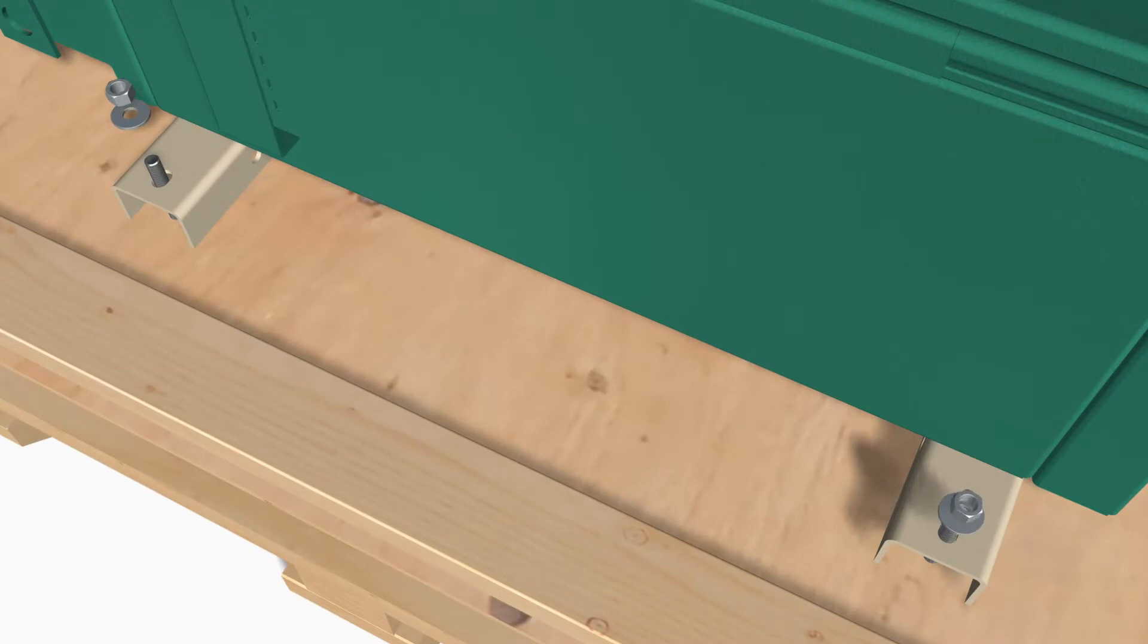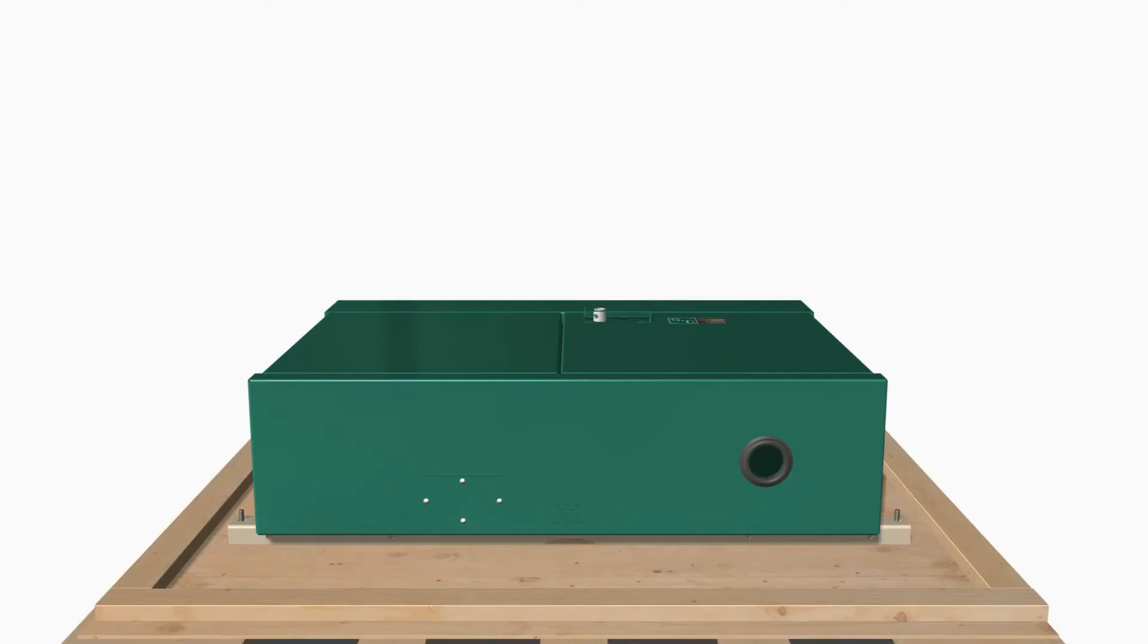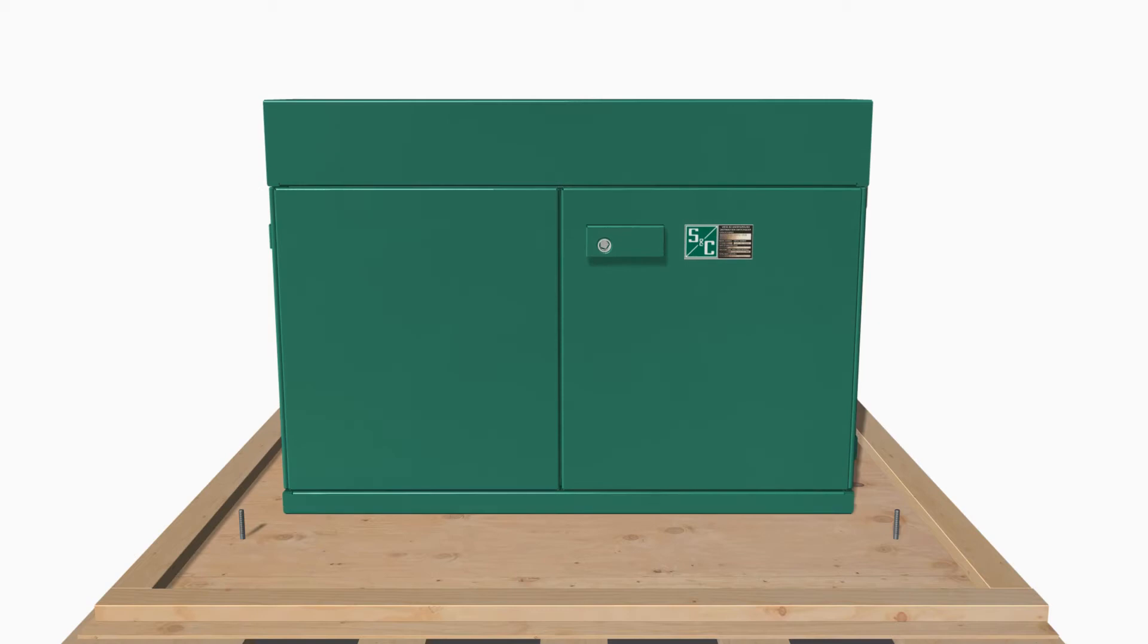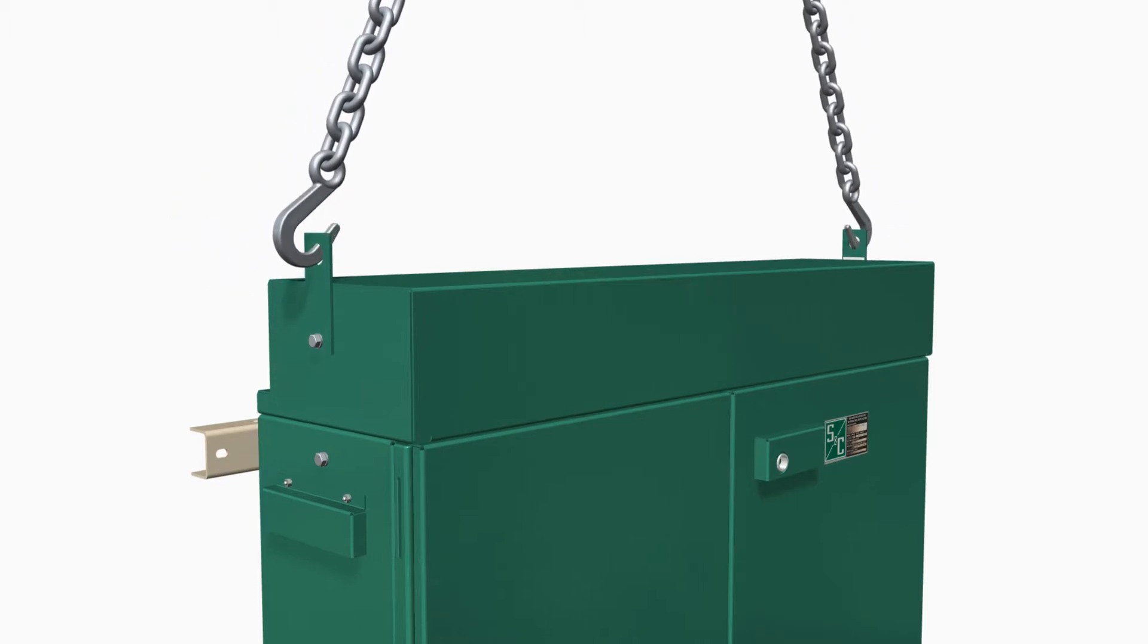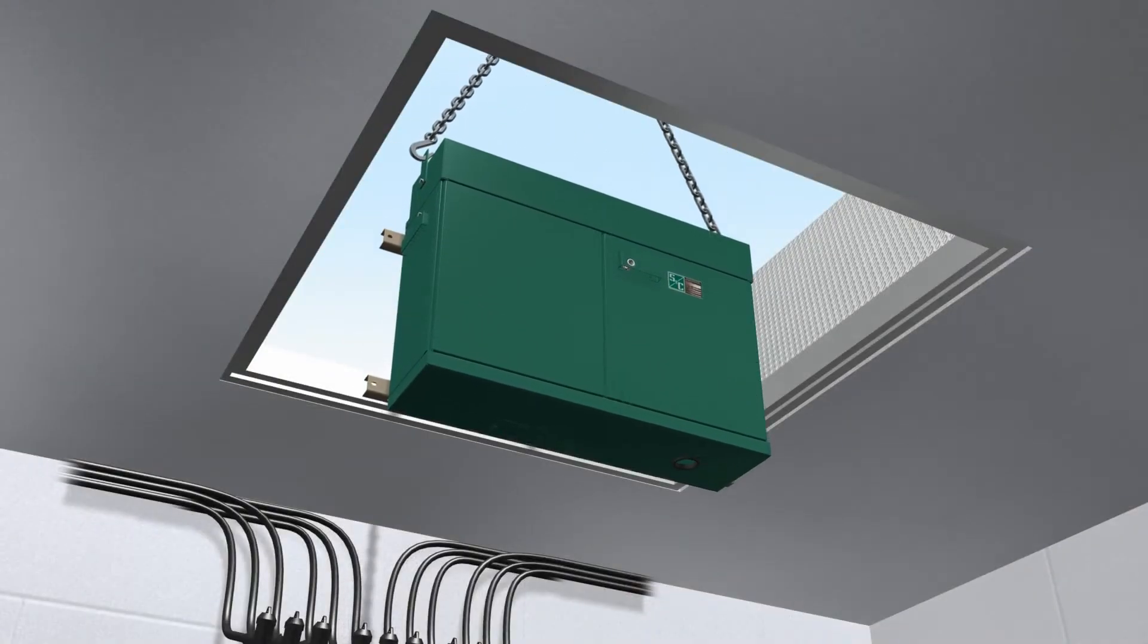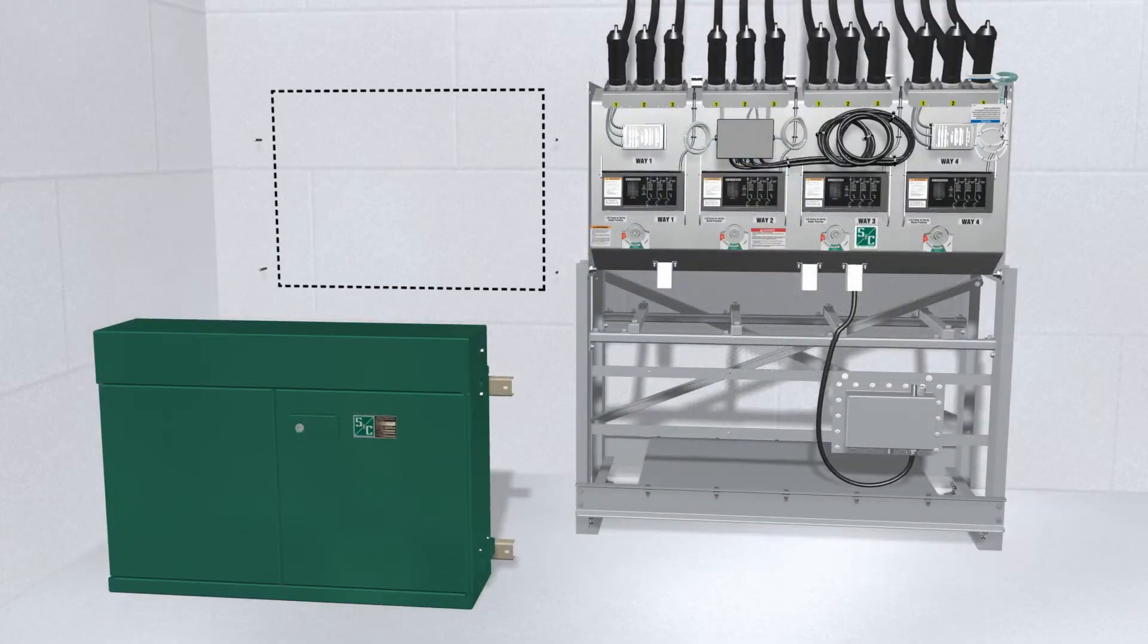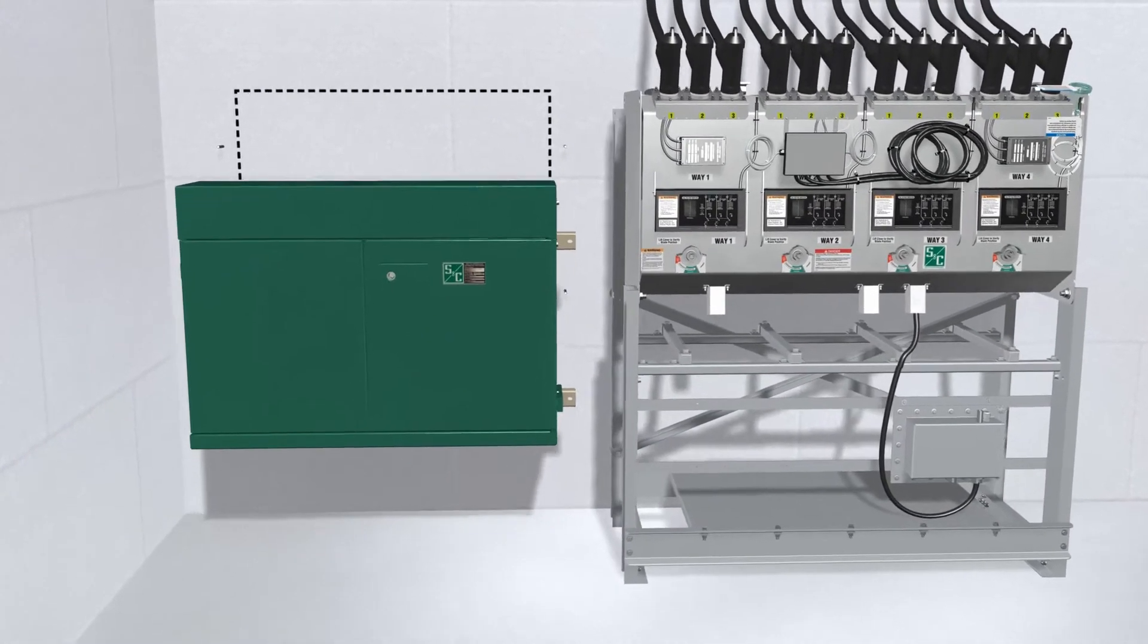Unbolt the low-voltage enclosure from its skid and set it upright if necessary. Use the same precautions for lifting as with the tank. Use a two-point lifting scheme to properly balance the enclosure. Lower the enclosure into the vault. Verify the enclosure is positioned correctly for mounting to a wall or post.